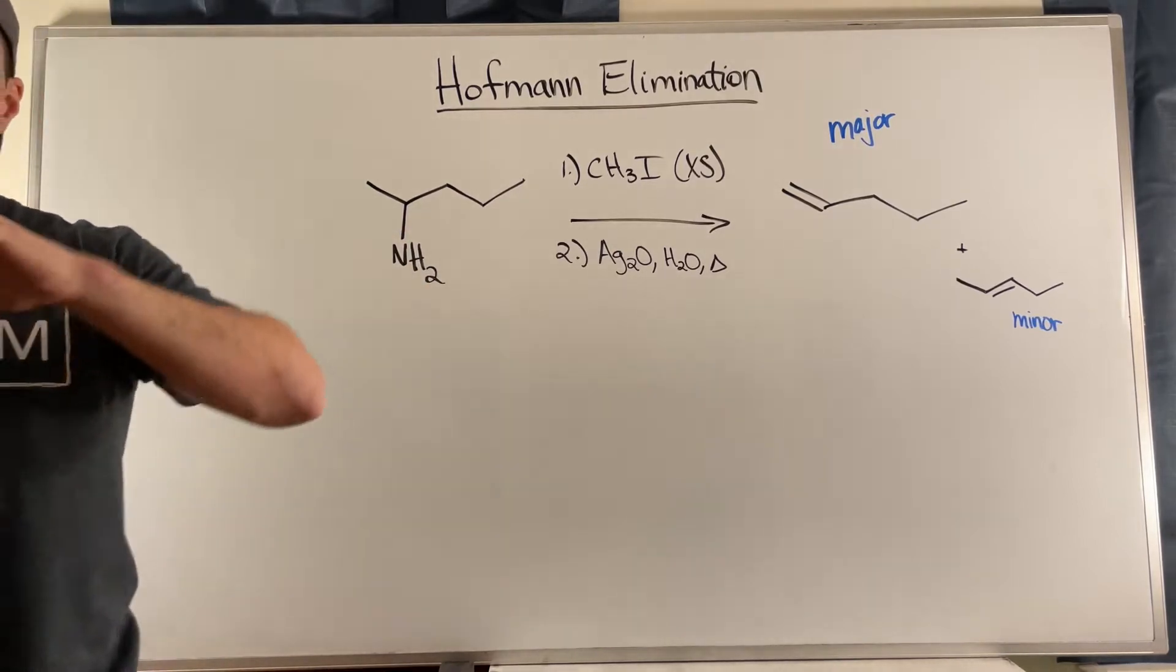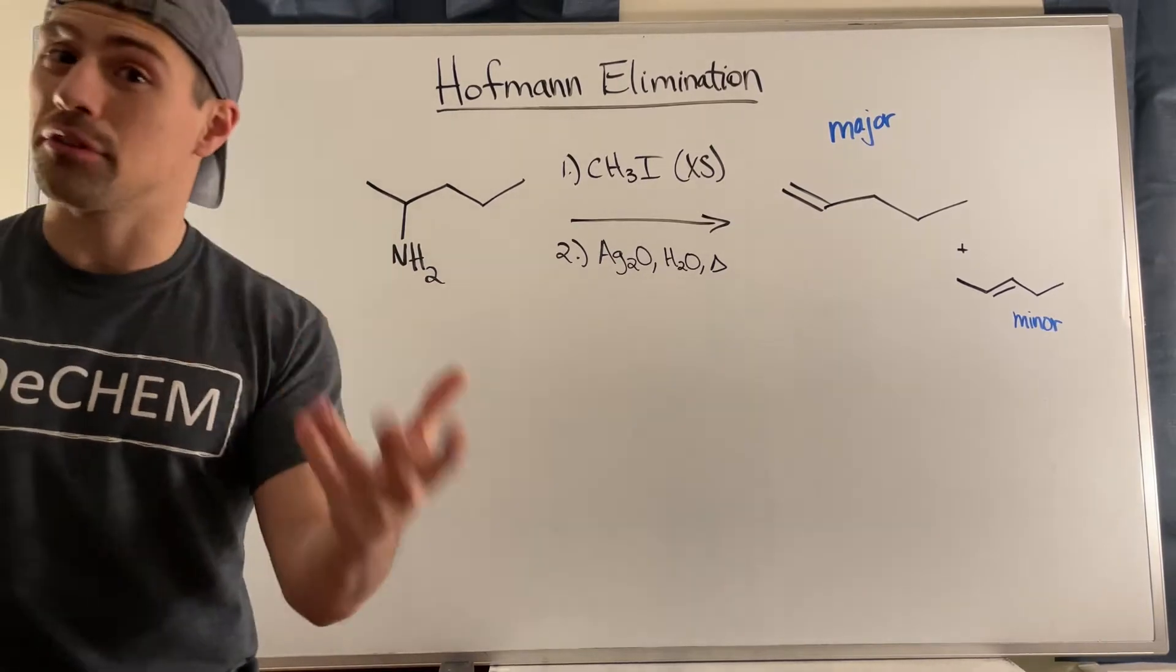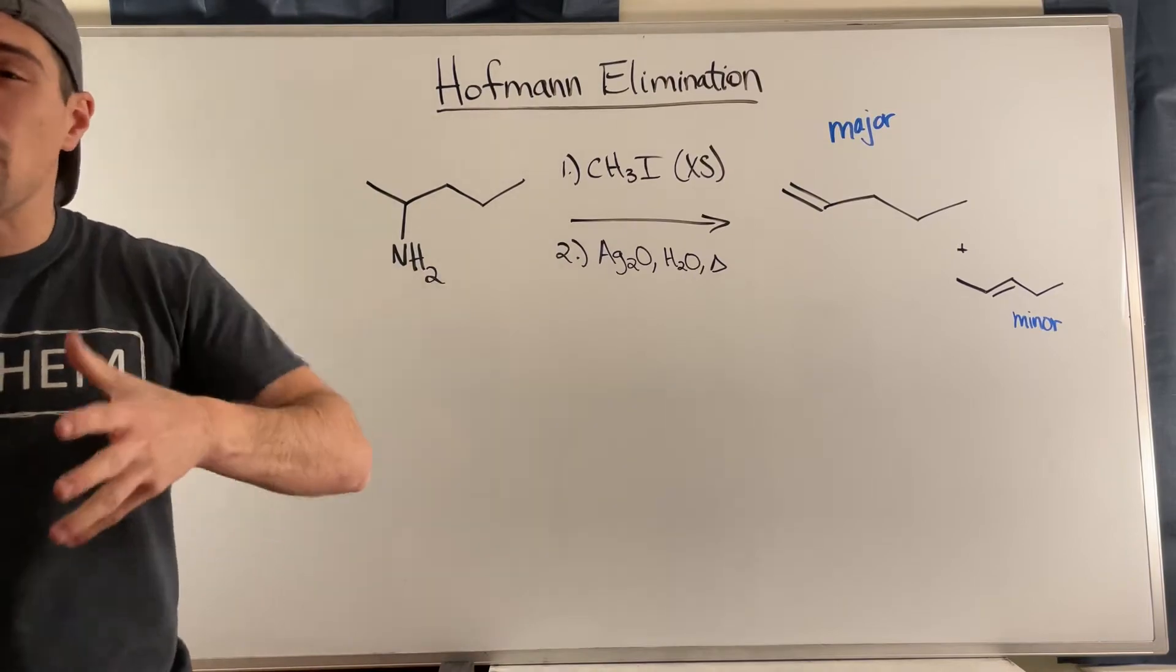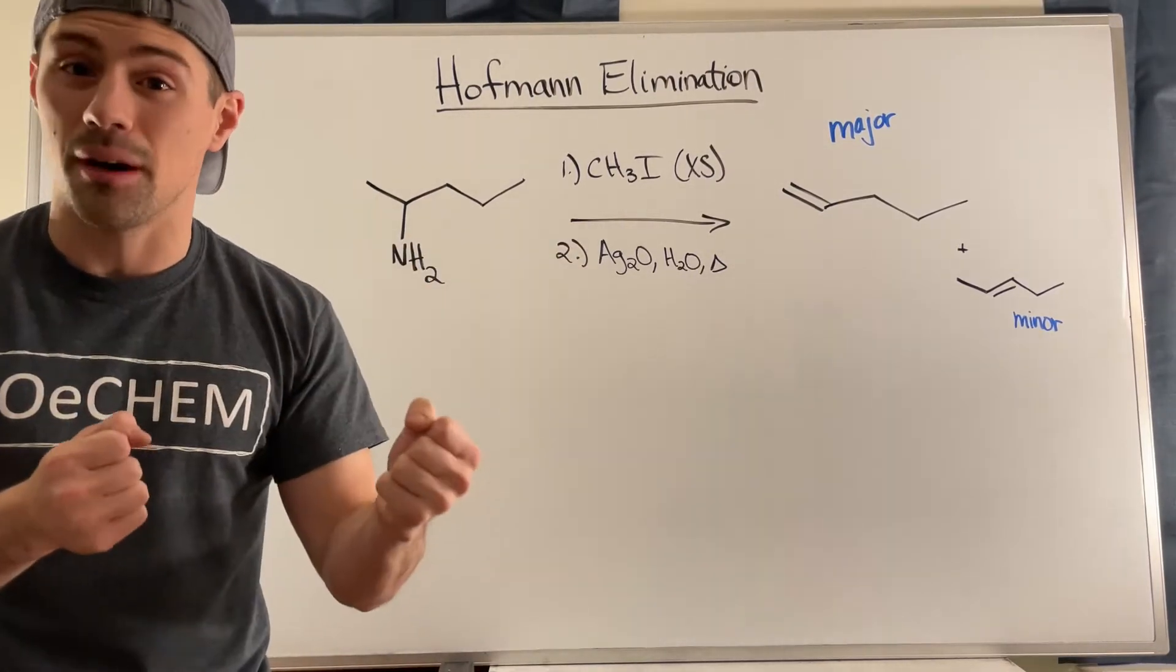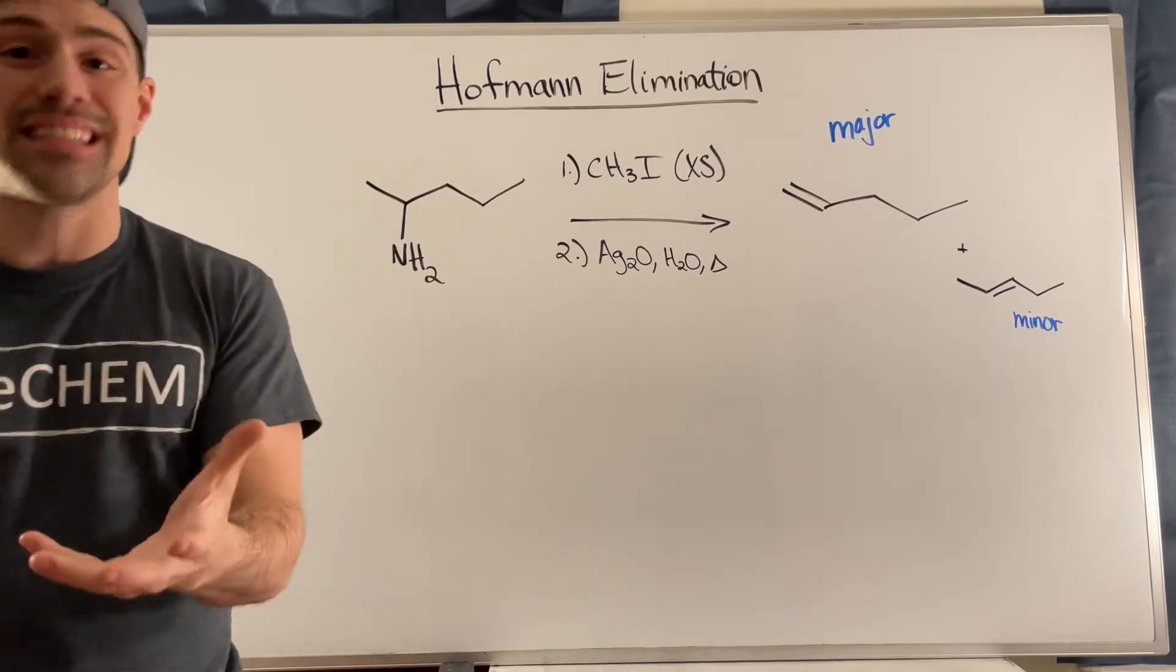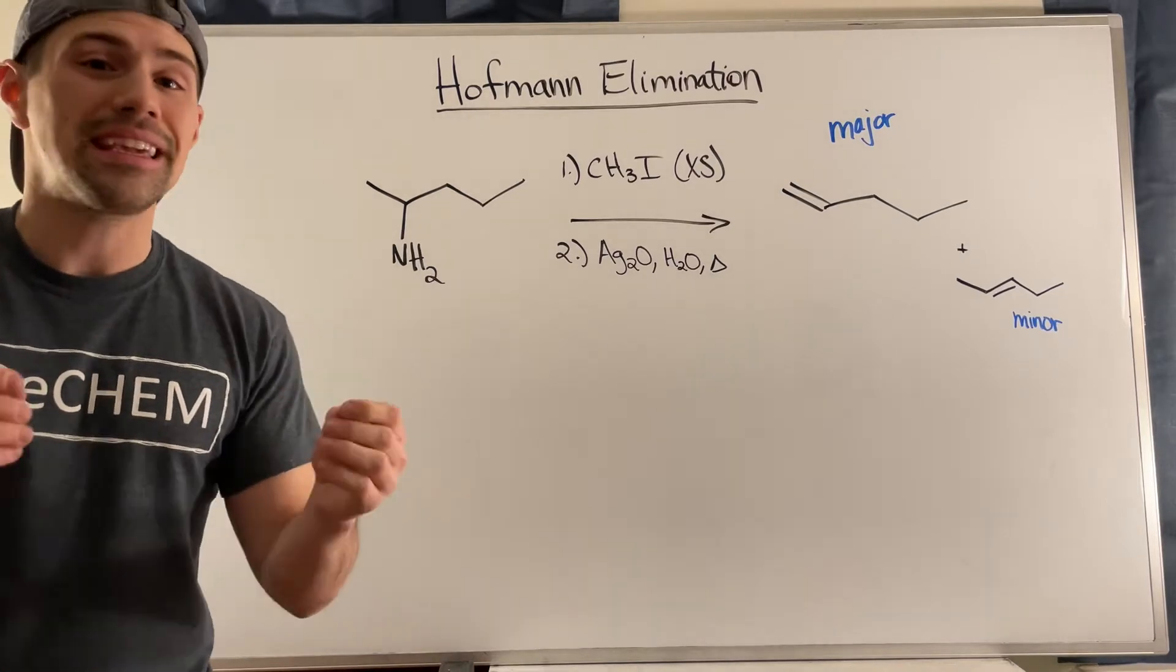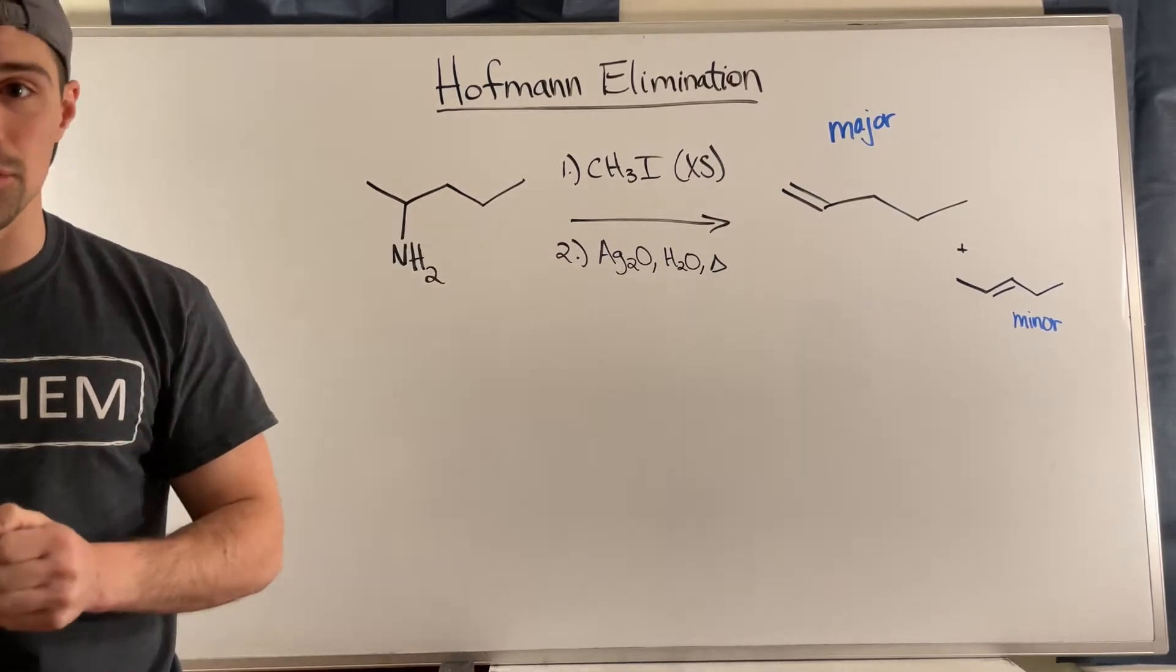So if you had a big bulky base like our classic friend potassium tert-butoxide or even LDA, if that's something used in your course, then remember that base? It's hard for that base to get in there and pick off that proton to make the more substituted double bond. So it takes the easiest one, a hydrogen off of a carbon that is less substituted, making the Hofmann product as opposed to the Zaitsev product, the less substituted double bond.